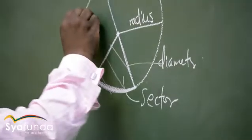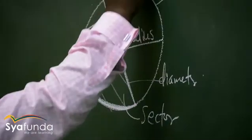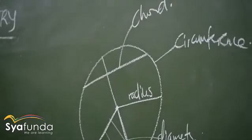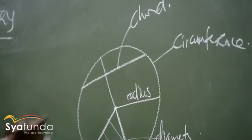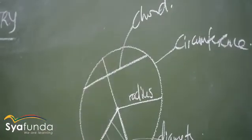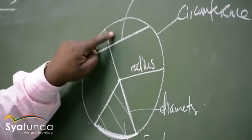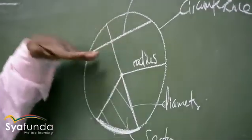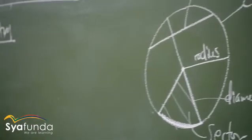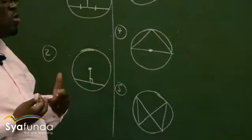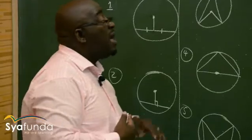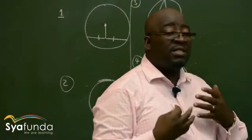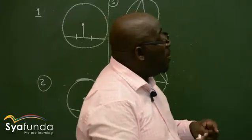Then there is something called a chord. A chord divides our circle into two parts — a smaller part called a minor segment and a bigger part called a major segment, separated by that chord. It is important that we know the parts of the circle. There are words we use a lot in Euclidean geometry, like 'subtends.' Subtends means to form.